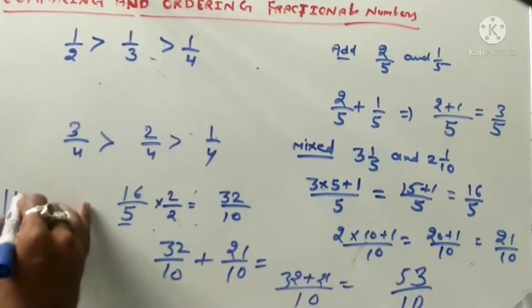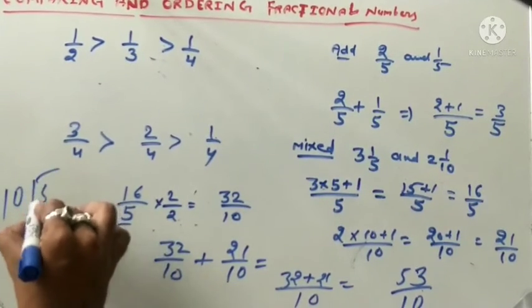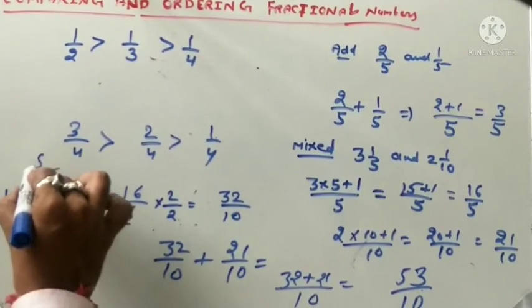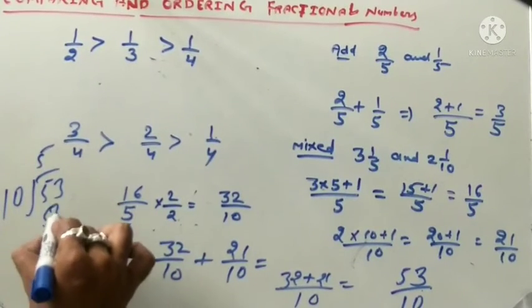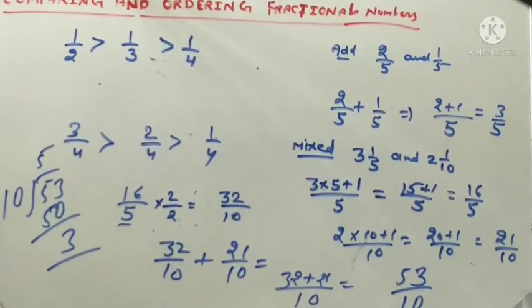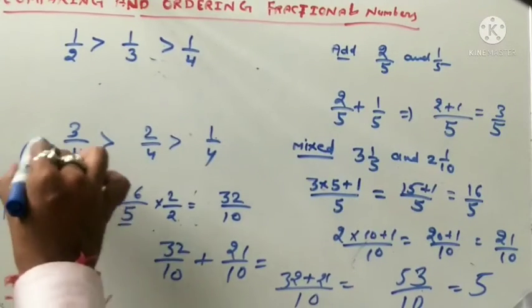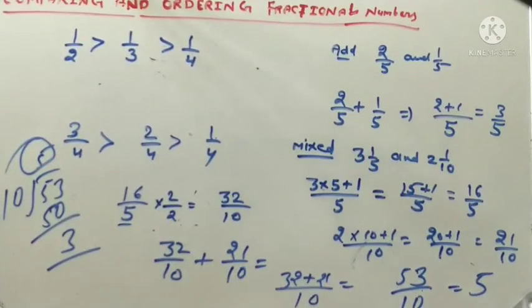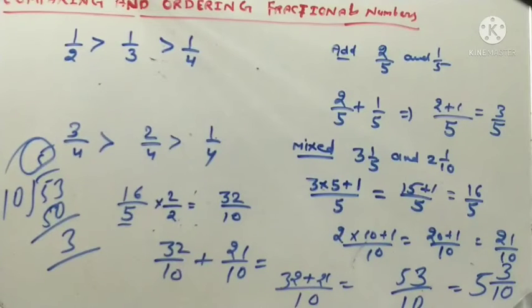Now divide: 10 into 53 gives quotient 5 and remainder 3. So our answer becomes 5 and 3 upon 10 as a mixed fraction.